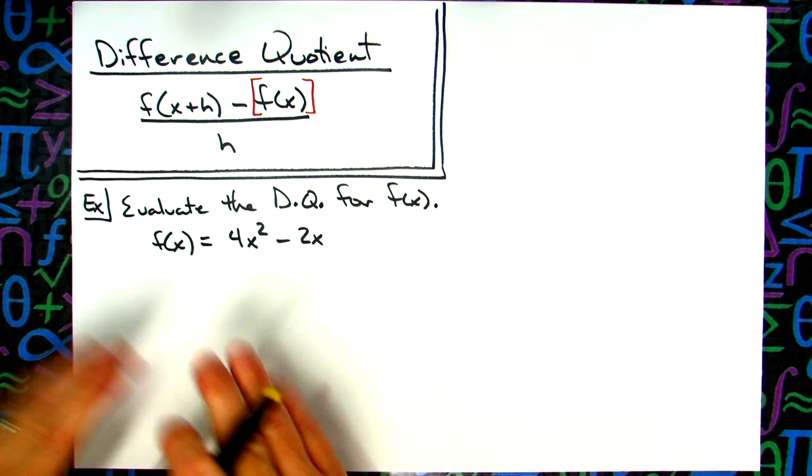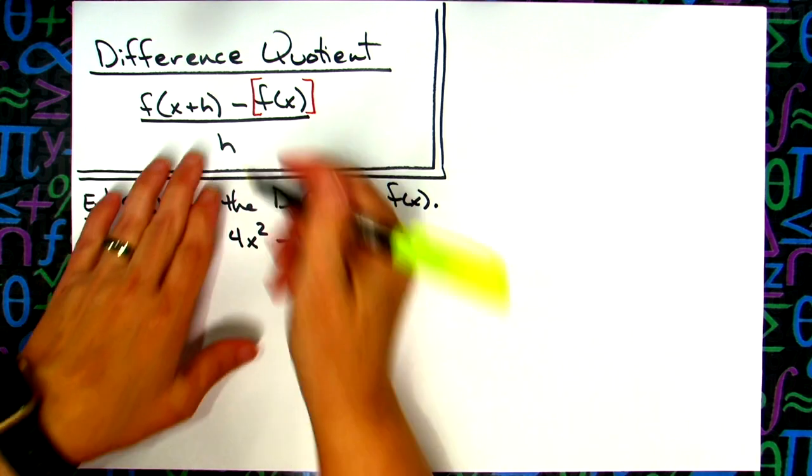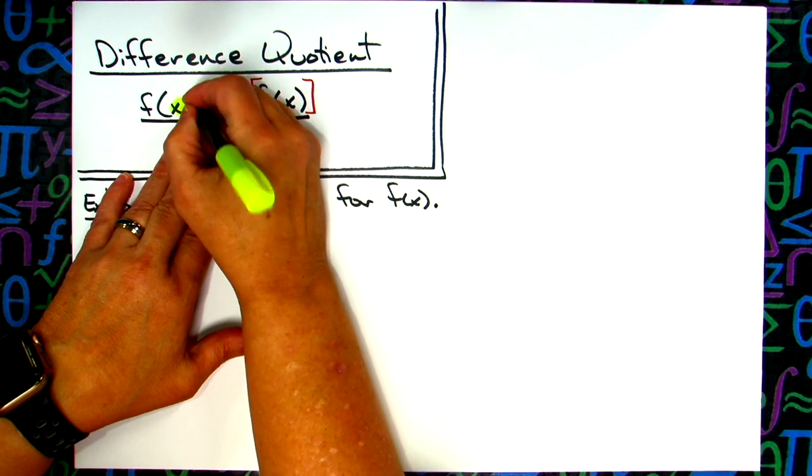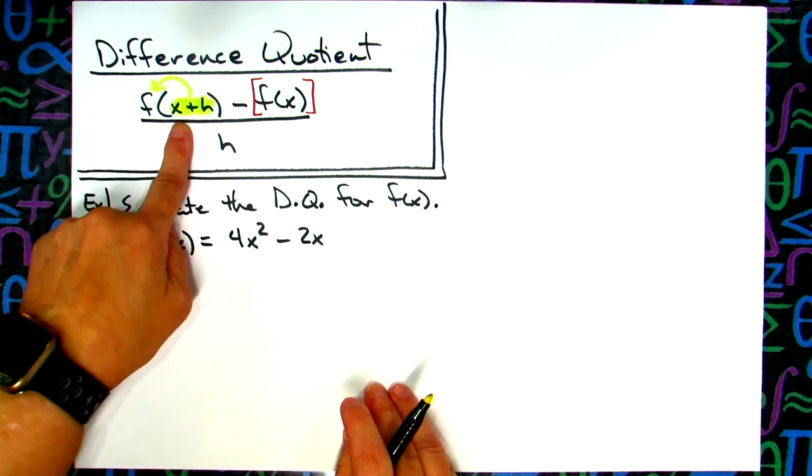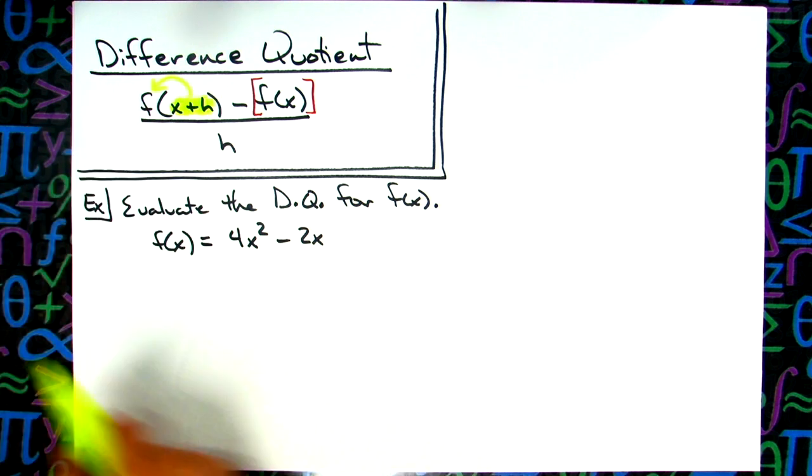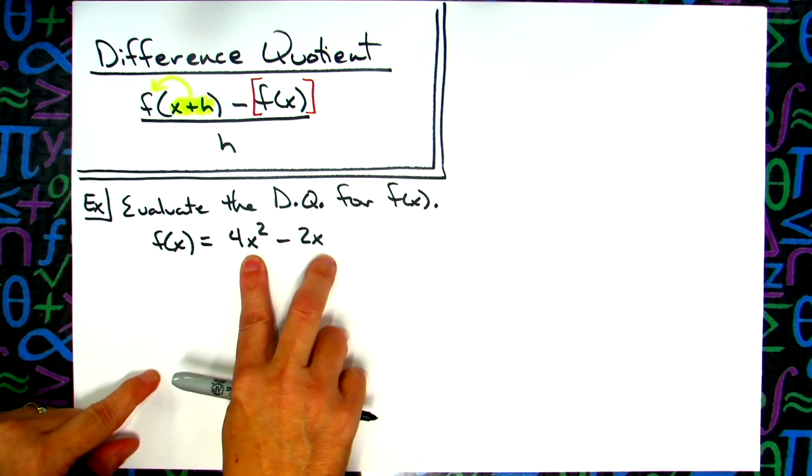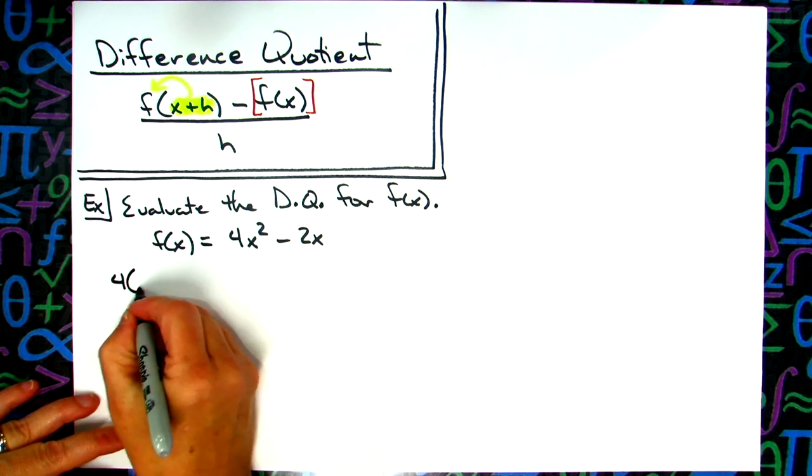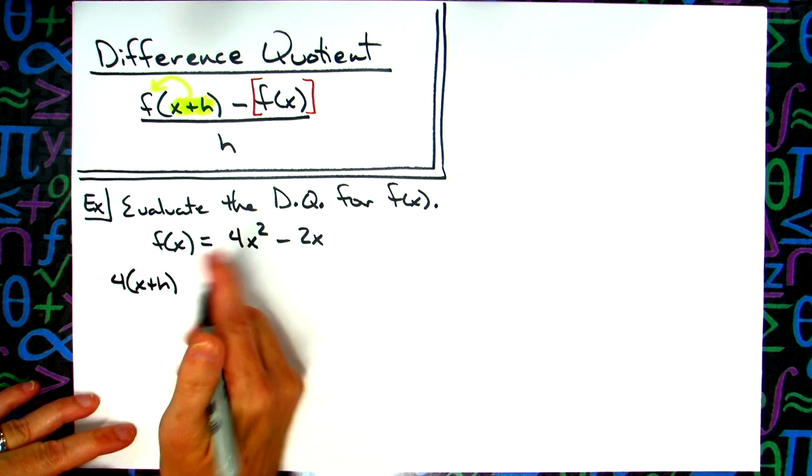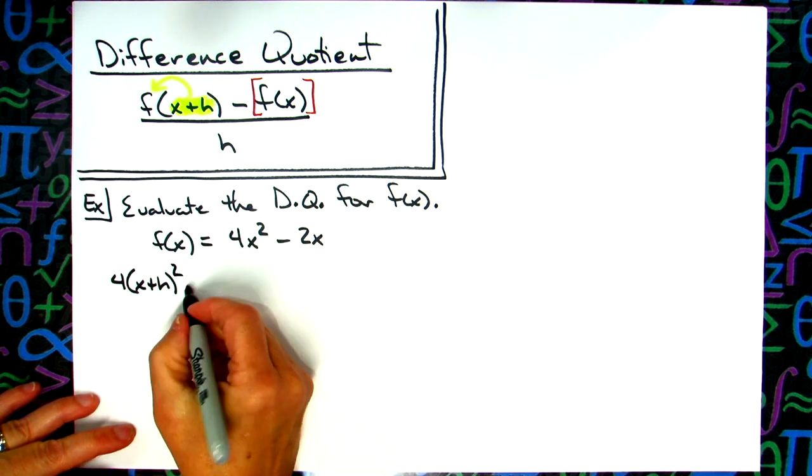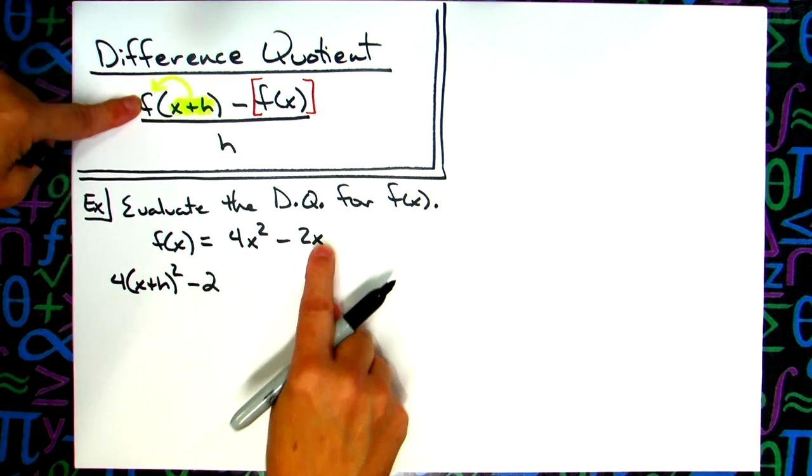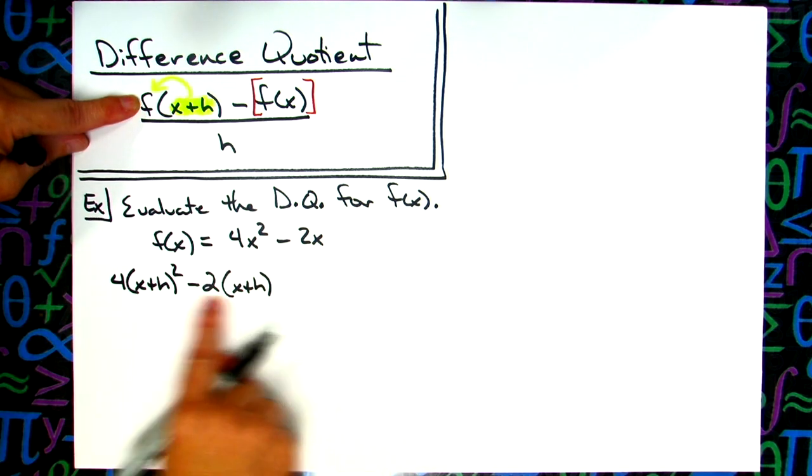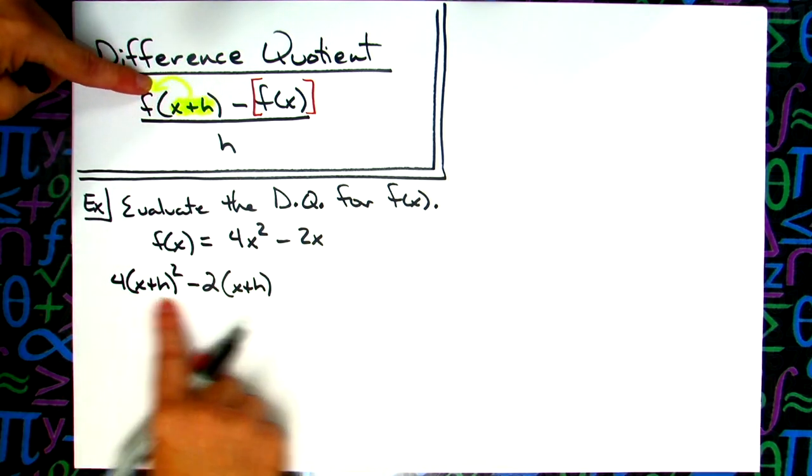We'll do like a medium difficulty one and then we'll do a more challenging one. Evaluate the difference quotient for f of x. I'm going to give you f of x. This one we'll start out with a kind of a medium one here. Let's just start out with 4x squared minus 2x.